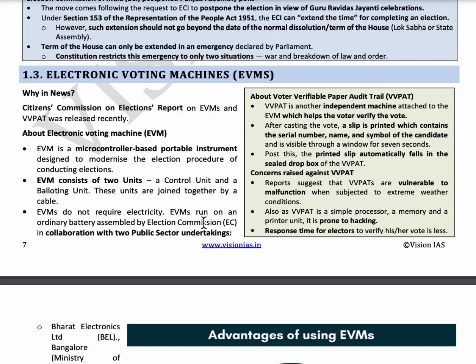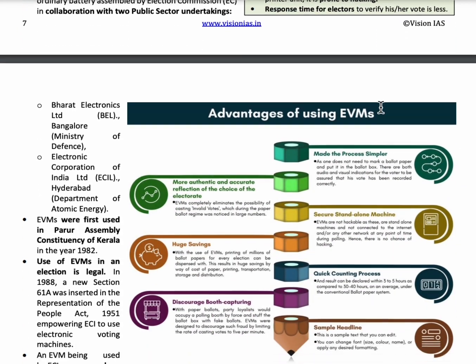Another machine called VVPAT — Voter Verifiable Paper Audit Trail — is also attached to the EVM, which helps the voter to verify their vote.